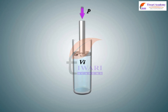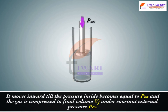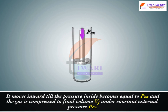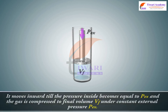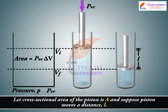When an external pressure Px, which is greater than P, is applied to the piston, it moves inward till the pressure inside becomes equal to P and the gas is compressed to final volume Vf under constant external pressure Pex. Let the cross-sectional area of the piston be A and suppose the piston moves a distance L.